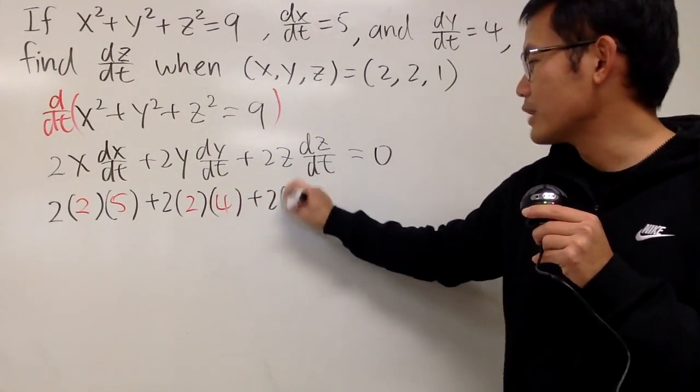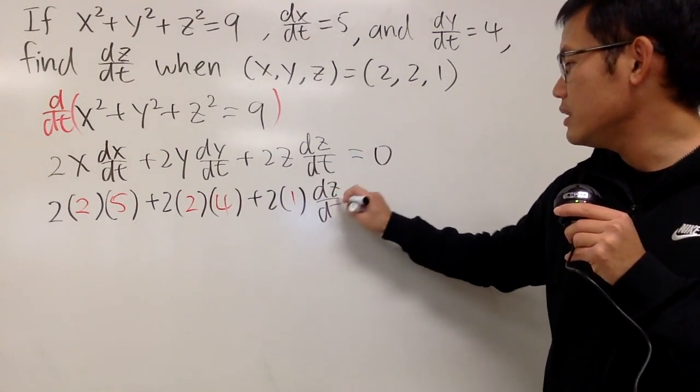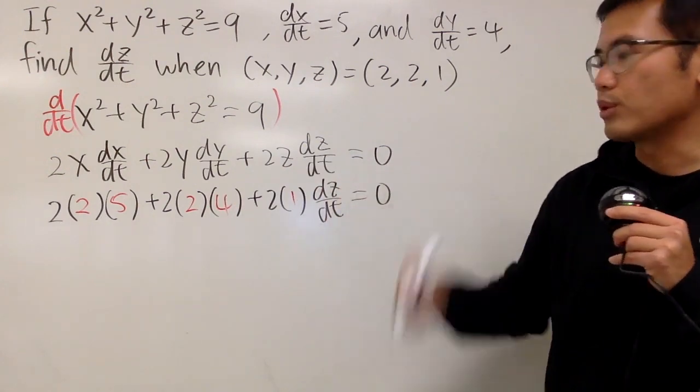And then plus 2 times z is 1, so it's like this. So, we have dz/dt, which we don't know the value, and we'll just try to figure this out.